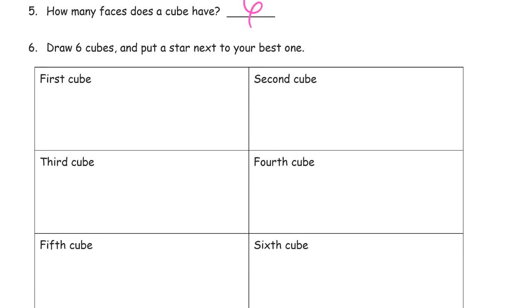Draw six cubes and put a star next to your best one. So our trick for drawing these is that you draw a square first. There are other tricks to use for different kinds of drawings of cubes. And then you make sort of an L, and then connect the ends. There's one.